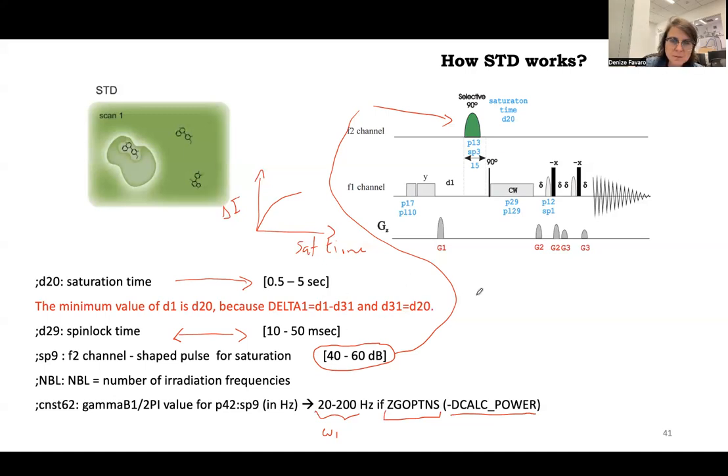Another important thing is Delta one is D1 minus D31. And D31 is your saturation time. The minimum D20 that you put there has to be at least the same size of D1. Otherwise you're going to have a negative number here and you're going to have a complaint. So I like to use Delta one equal zero or one second. So to have zero, you just make D1 equal D20. And you can go like 0.5, one second, two seconds, whatever.